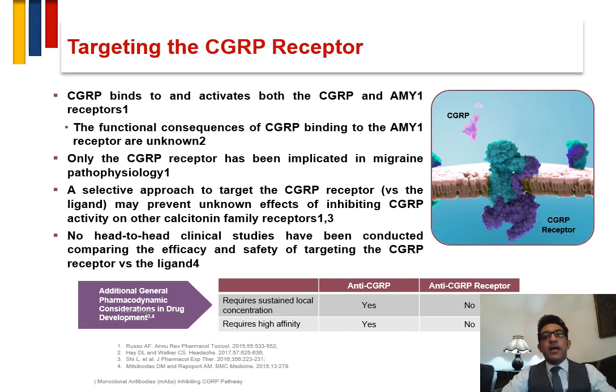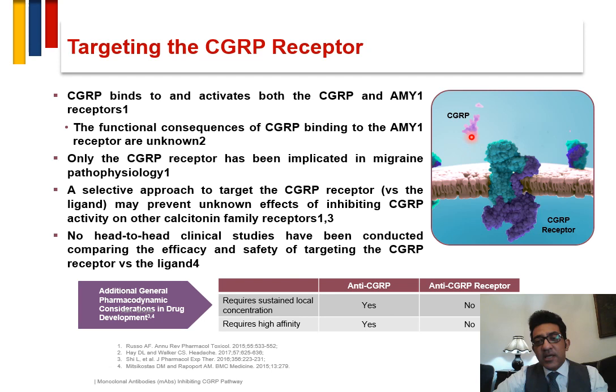Because of this peculiar distribution, the CGRP receptor was targeted with anti-CGRP and anti-CGRP receptor therapies. The anti-CGRP is directed towards the ligand itself.